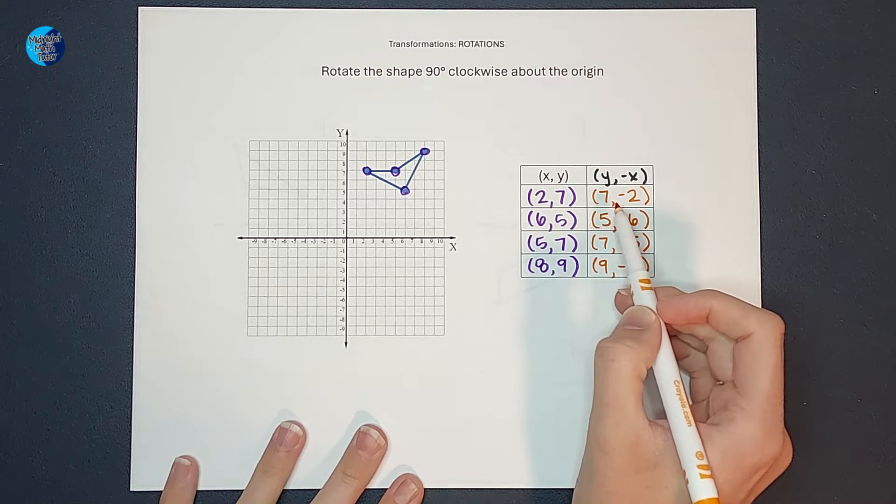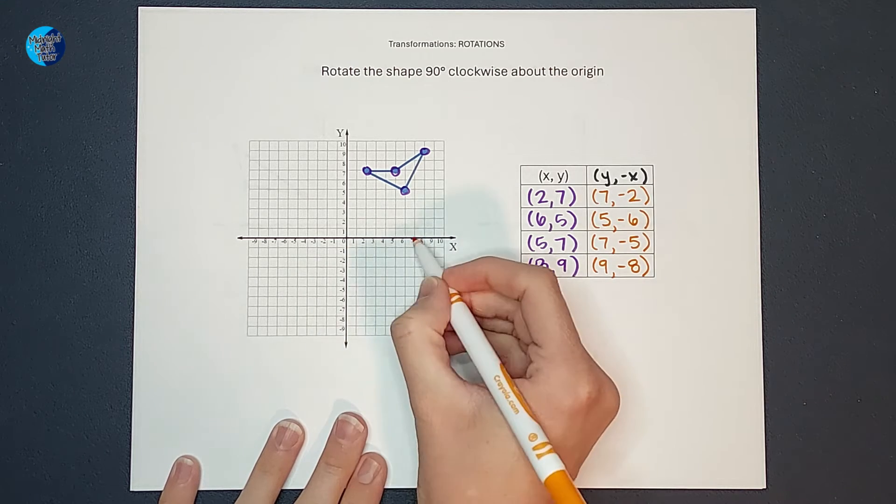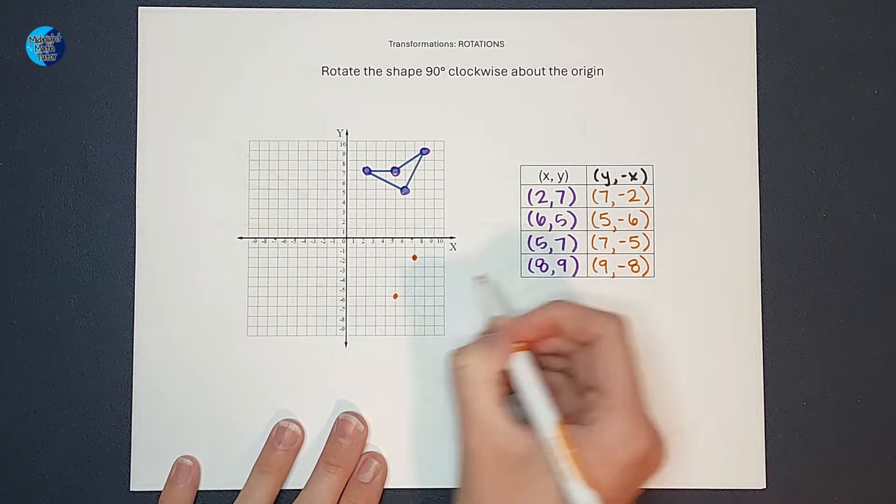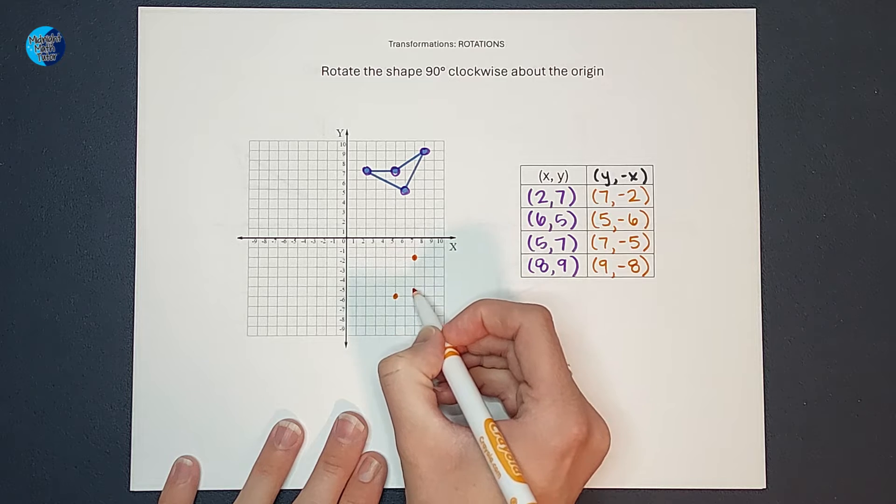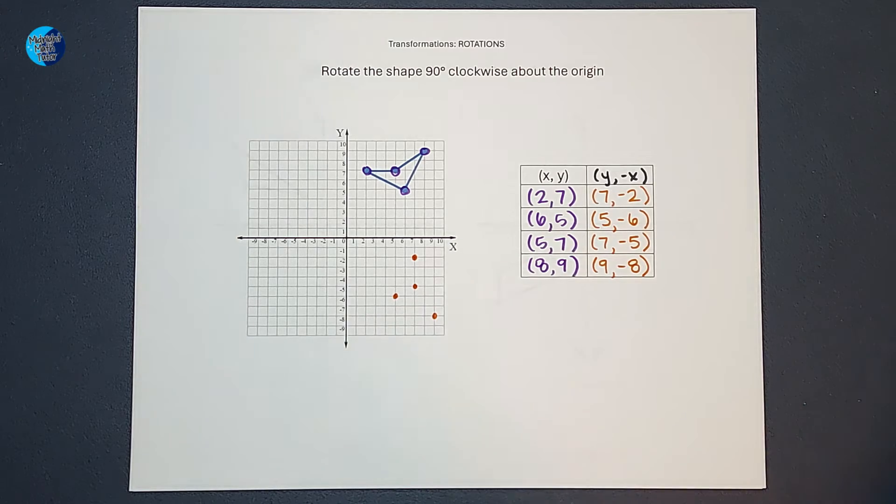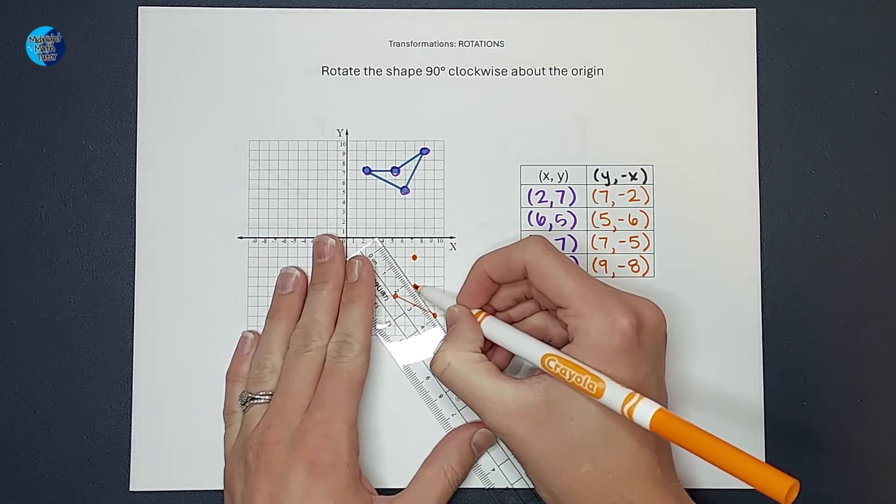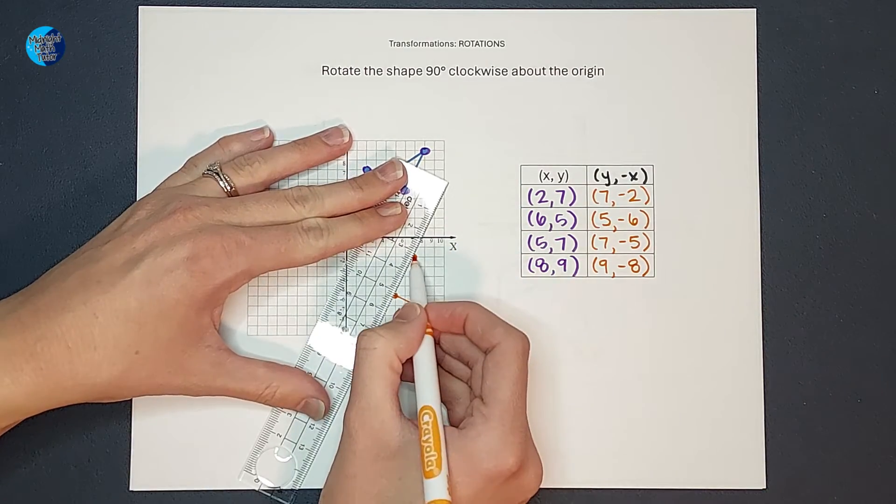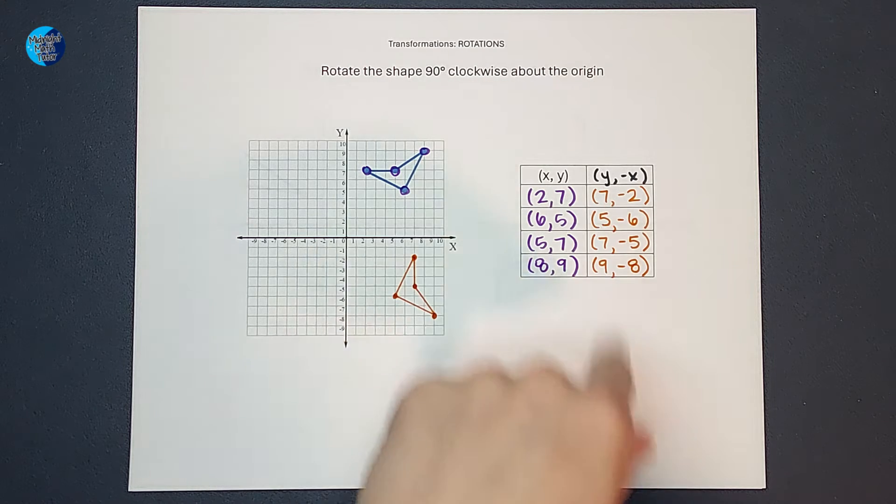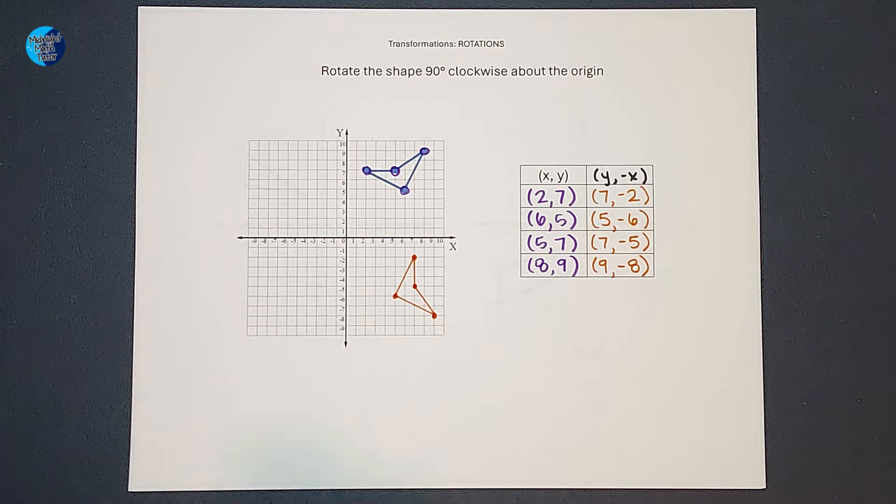So now I'm going to plot these points. So seven, negative two, five, negative six, seven, negative five, and nine, negative eight. Then I'm going to connect the dots. And there we go. Does that look like I took that shape and rotated it 90 degrees clockwise about the origin? I think it looks pretty good.